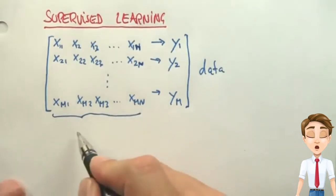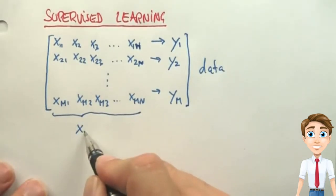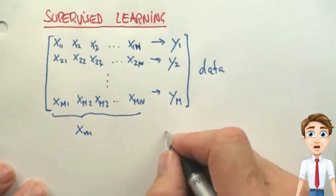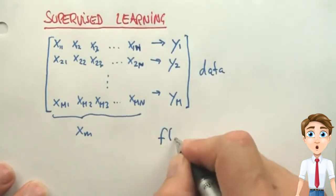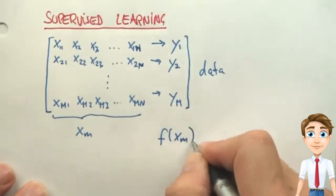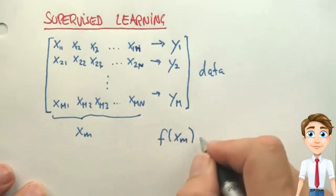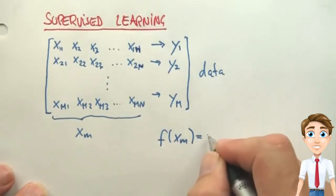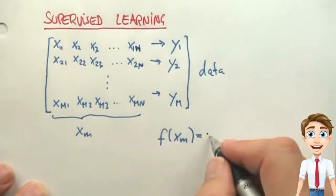If we call each input vector Xm, then we wish to find another function that given any Xm or any future vector X produces as close as possible my target signal Y.